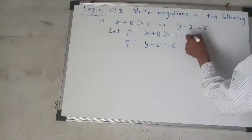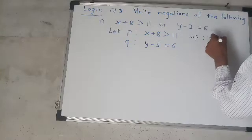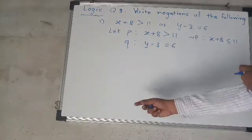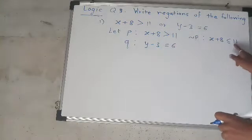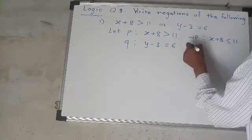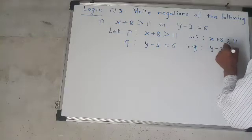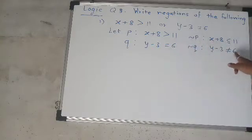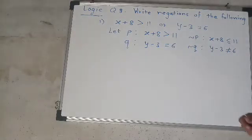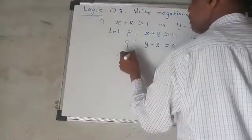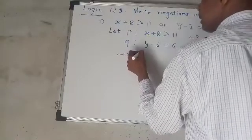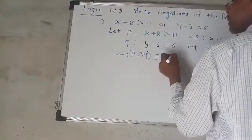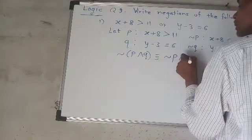Write negations. Negation P: x plus 8 less than or equal to 11 (since negation of greater than is less than or equal to). Negation Q: y minus 3 not equal to 6. Now, negation of P disjunction Q is logically equivalent to negation P conjunction negation Q.